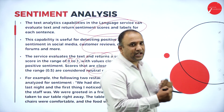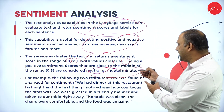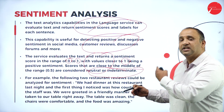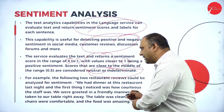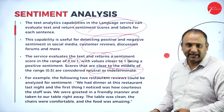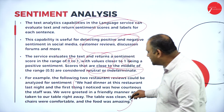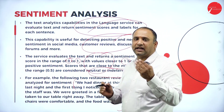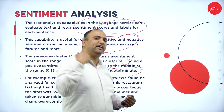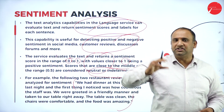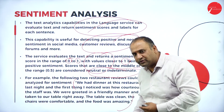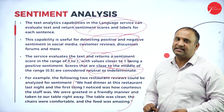The score ranges between 0 and 1 — 0 being the least and 1 being the maximum. Values close to 1 are positive sentiment, meaning we are reaching the true value. Scores around 0.5 are neutral — neither a success nor a failure. Anything moving towards 0 is considered negative sentiment. For example: 'We had dinner at this restaurant last night and the first thing I noticed was how courteous the staff was. We were greeted in a friendly manner and taken to our table right away. The table was clean, the chairs were comfortable, and the food was amazing.' The sentimental analysis picks up the natural flow of this review.